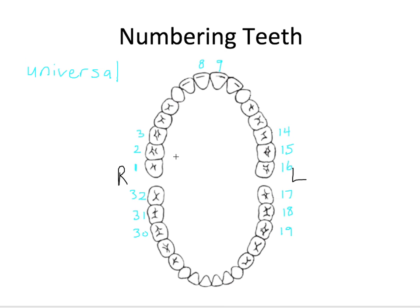Of course, some people like myself are never born with or never develop any wisdom teeth. So if you are missing, say, those teeth, you just skip those numbers — the adjacent teeth would still be number two and number three and so on. You just wouldn't include those missing numbers. They would be called congenitally missing teeth. There are other numbering systems out there, but for the sake of this video we'll stick with the universal system.